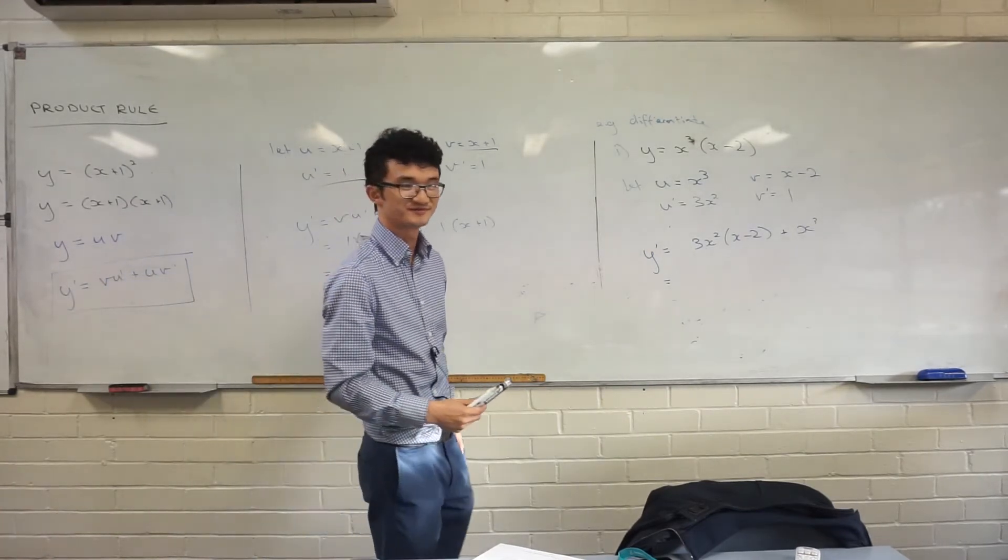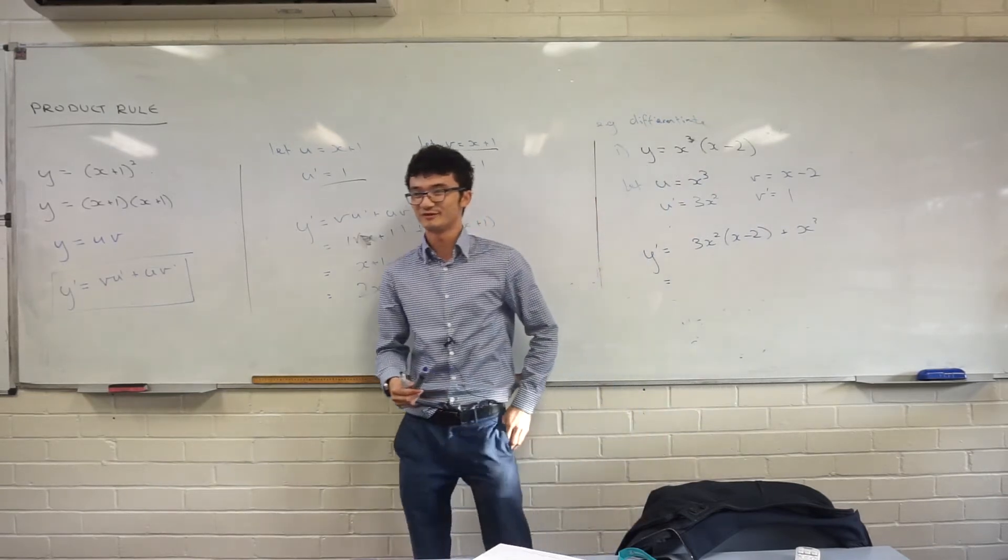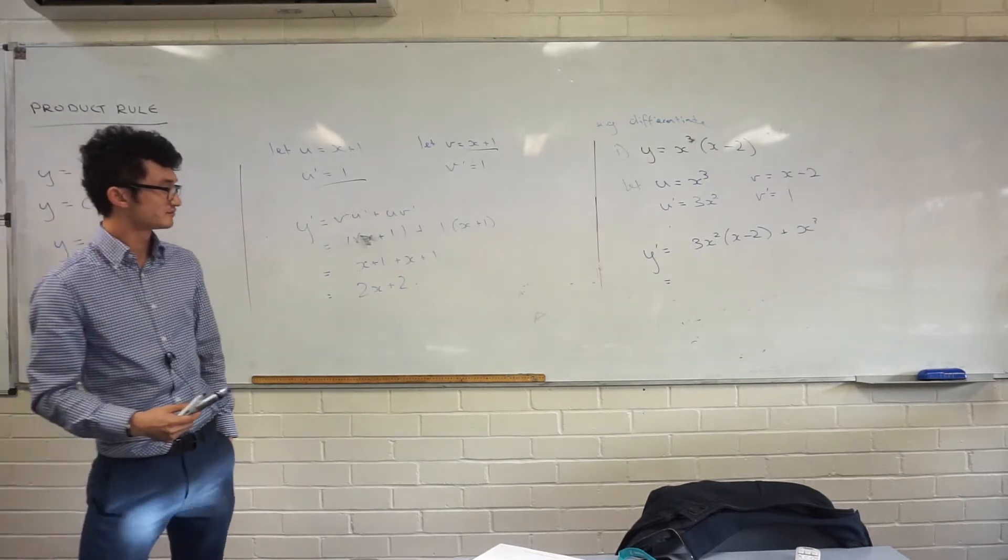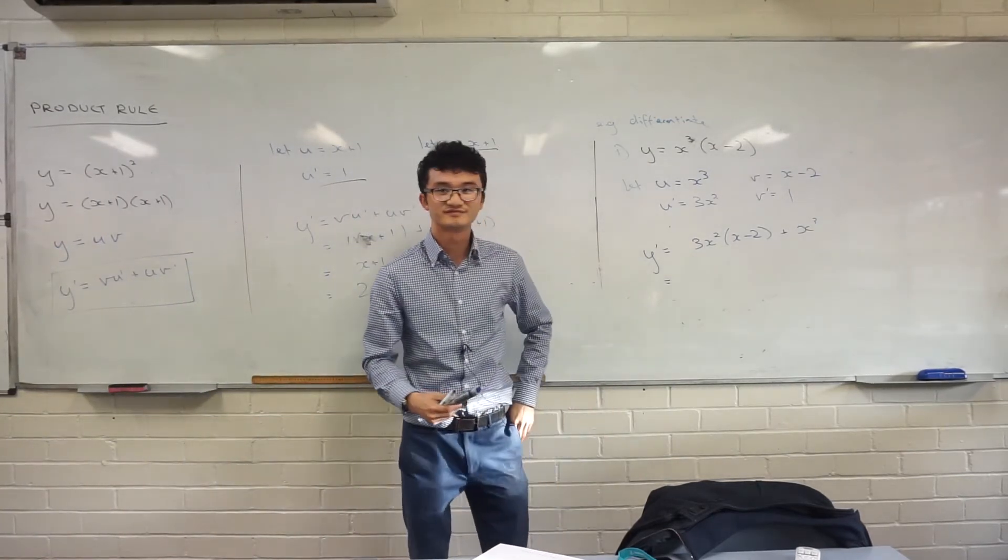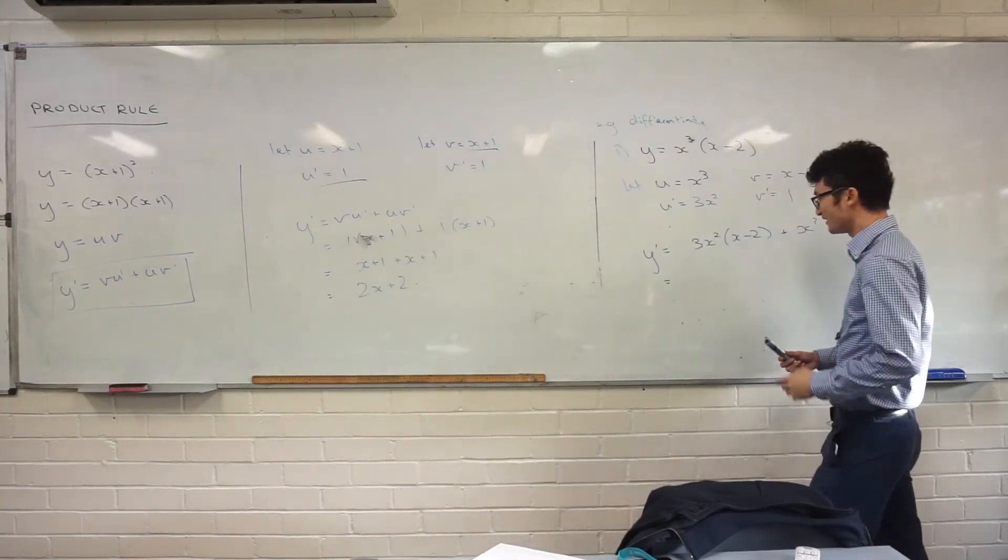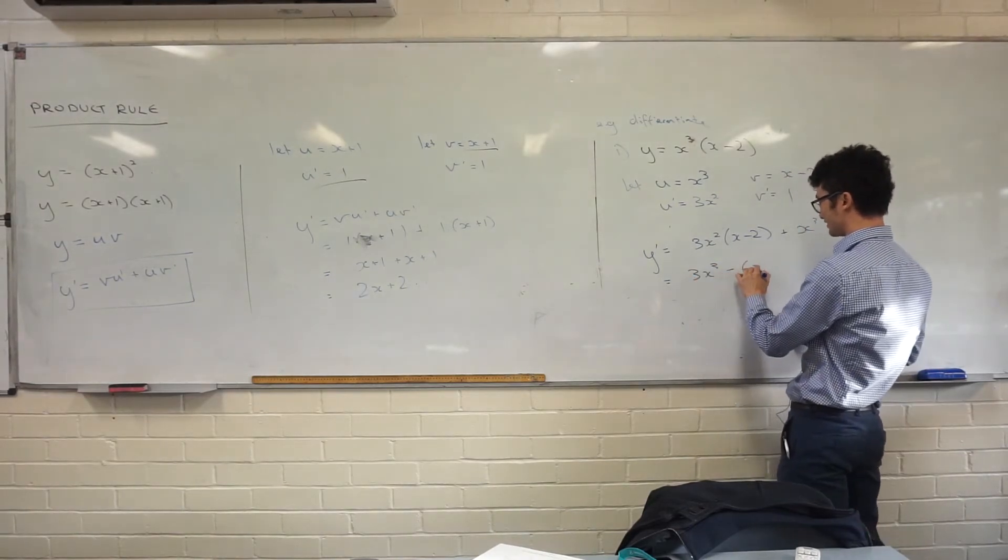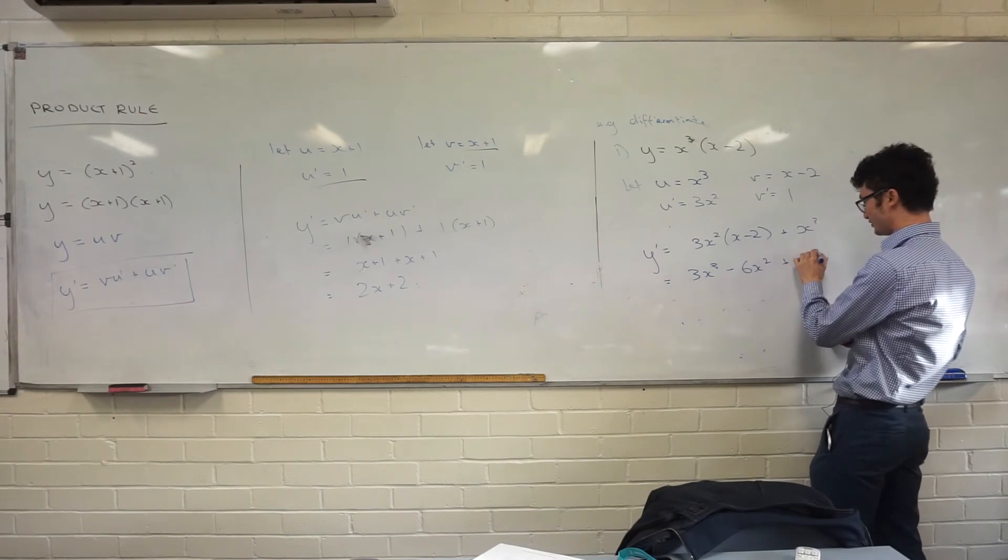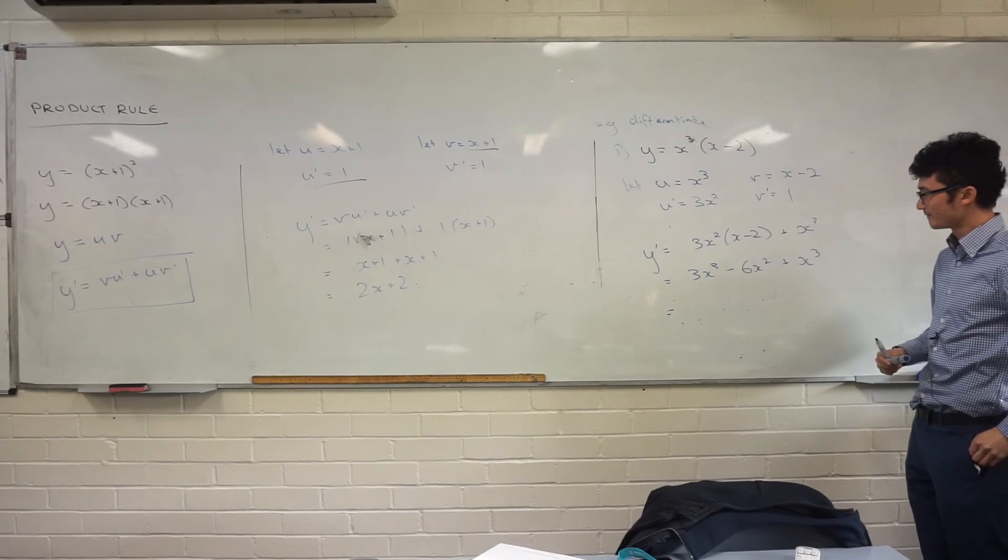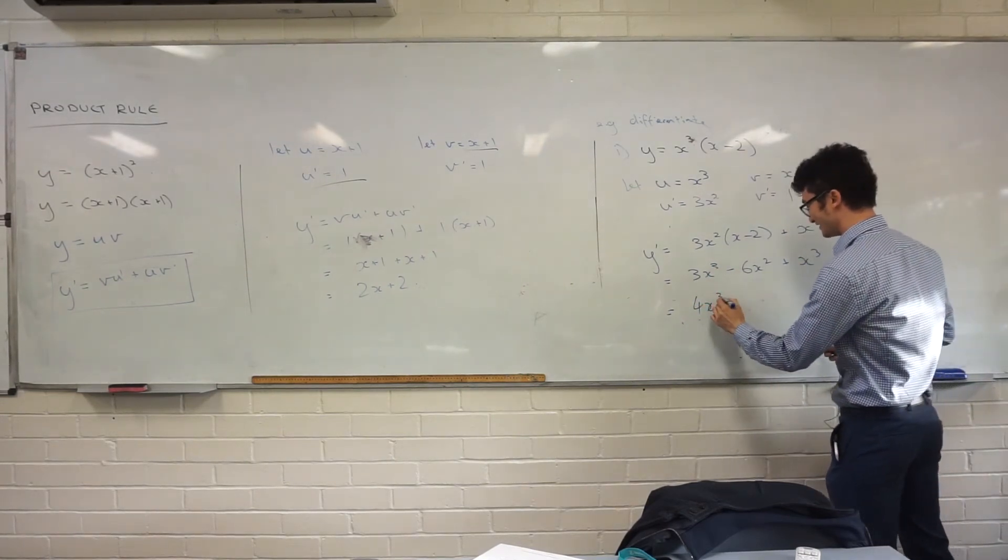How do we like that? We're happy with that one? We could expand it out. Yeah, let's try it out. So let's expand this one out. We get 3x cubed minus 6x squared plus x cubed. Anything else we can simplify? Yeah. We've got some x cubed terms there that we can bring together.